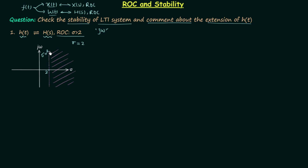Points on the line σ = 2 are not included in the ROC. Since no poles exist in the ROC and moving to the right reveals no other poles, σ = 2 is the rightmost pole. Our ROC exists on the right side of this rightmost pole, and according to the property this implies that h(t) is a right-sided signal. So we now have knowledge about the extension of h(t).